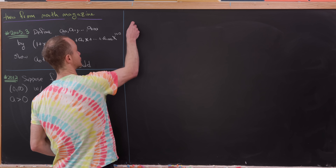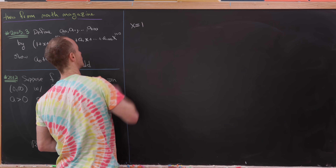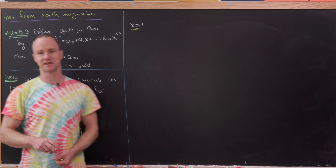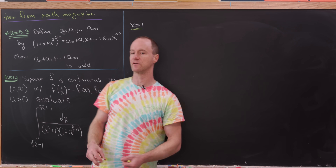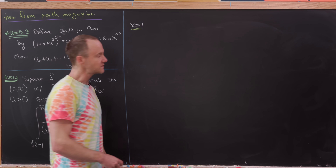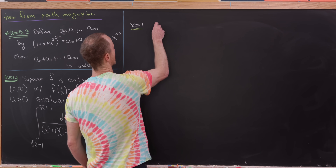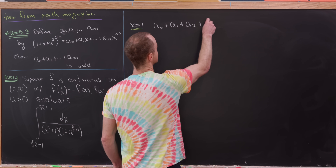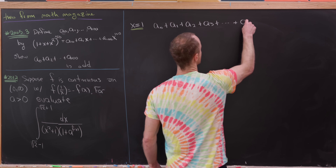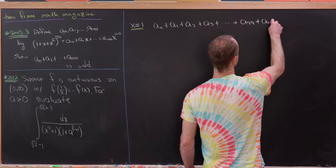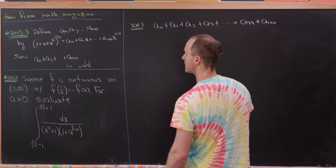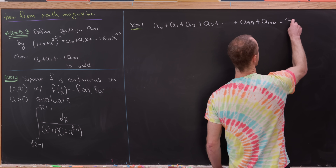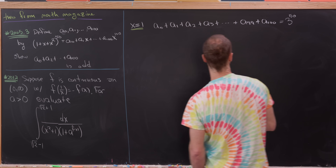Let's start by setting x equal to 1 and see what we get. You might say setting x equal to 1 won't help us — it gives us the sum of all of the numbers — but it's at least a good start. Setting x equal to 1, the right-hand side is the sum of all numbers: a0 + a1 + a2 + ... + a100. On the left-hand side we have (1 + 1 + 1)^50, which is 3^50.